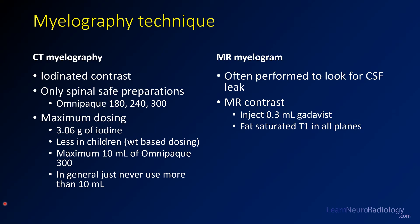Myelograms are essentially specialized versions of lumbar punctures where, after you've completed the lumbar puncture, you inject contrast for imaging either of the thecal sac or the CSF within the brain. In the case of myelography, you're doing it for imaging of the spine to evaluate for spinal canal narrowing. In CT myelography you're going to use iodinated contrast. You can only use spinal-safe preparations, which are typically those between concentrations of 180 and 300. We use OmniPaque, although there are other branded versions which are also safe.